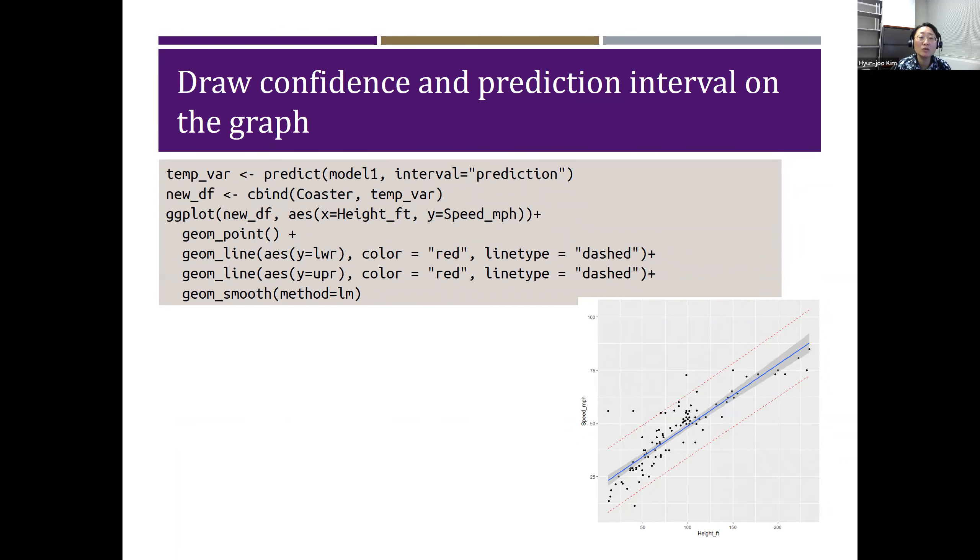We can also draw both confidence interval and prediction interval on the scatter plot. Confidence interval will be automatically drawn on the plot by the geom_smooth function.